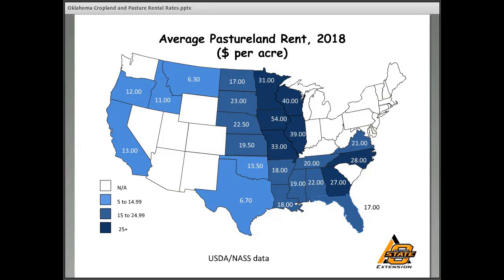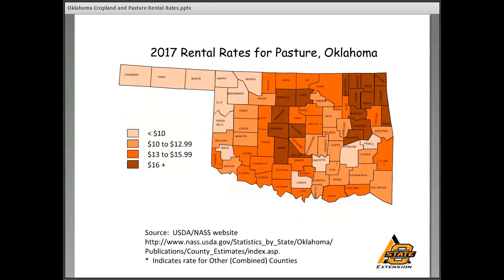You can see how our pasture rentals compare to other areas of the country — as expected, they are not as high as areas to our north and east that have higher productivity and stocking rates. When boiling Oklahoma numbers down to the county level, it follows a familiar pattern: higher rents in the east, lower out west. There are some urban influences around Oklahoma City, particularly along the US 81 / I-35 corridor, where there may be relative scarcity of pasture ground and some recreational interests also influencing the markets.